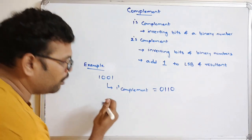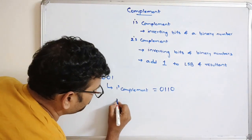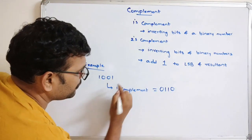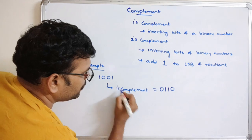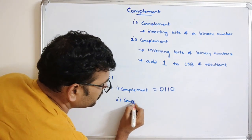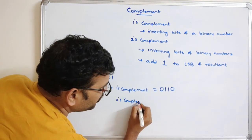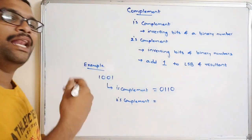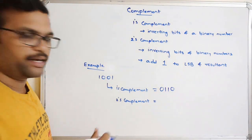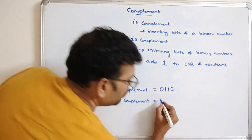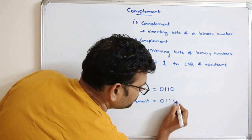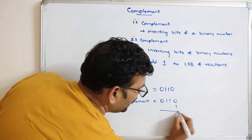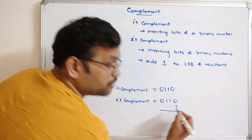What about the 2's complement? We need to add 1 to the LSB of the result after inversion. So after getting 0110 from inversion, we add 1 to the LSB: 0 plus 1 equals 1.